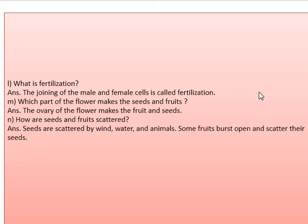Part L: what is fertilization? The joining of the male and the female cells is called fertilization. Which part of the flower makes the seeds and fruits? The answer is the ovary of the flower makes the fruits and seeds.